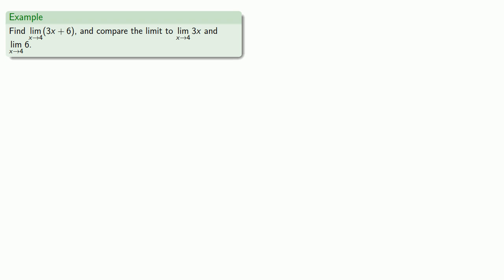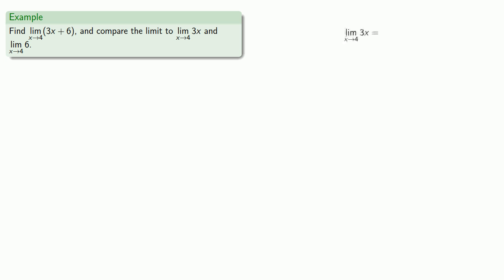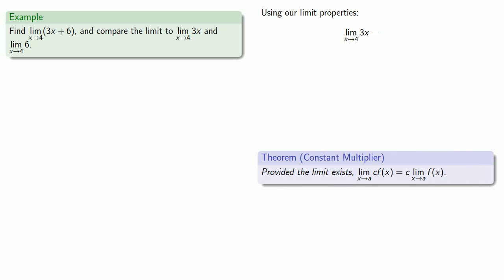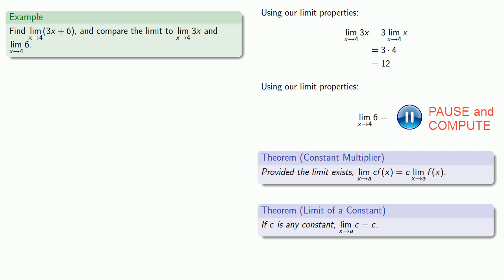The more we find out, the more we can find out. Let's compare a couple of limits. The type of function is determined by the last thing that you do — in this case, 3x is 3 times x, a constant multiple. So the limit can be found using the constant multiple rule: the limit of a constant times a function is the constant times the limit of the function. We just need to find the limit as x approaches 4 of x. And 6 is a constant, so the limit of a constant is just that constant.